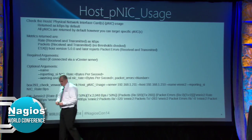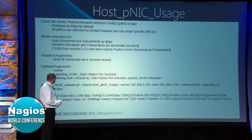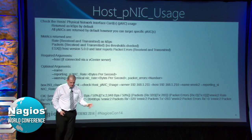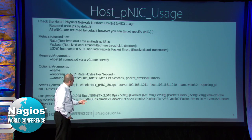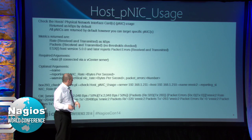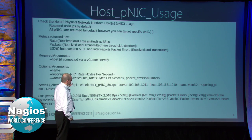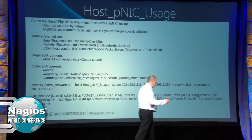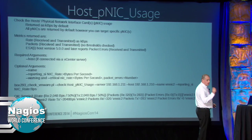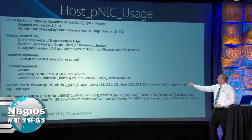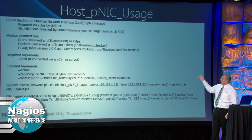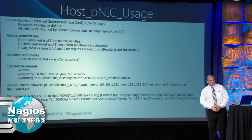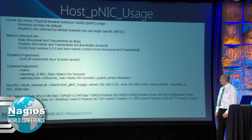Host PNIC usage - great for getting data about what's happening on the physical NICs. You might have teams of NICs - two NICs for the management network, two NICs for the guest VMs in a team, and another two NICs for iSCSI. So you can gather performance statistics on each one using the name argument. It gathers information on the rate and how many packets happen. On ESXi and later, packet errors are also available, which is great for finding faulty cabling or NICs.